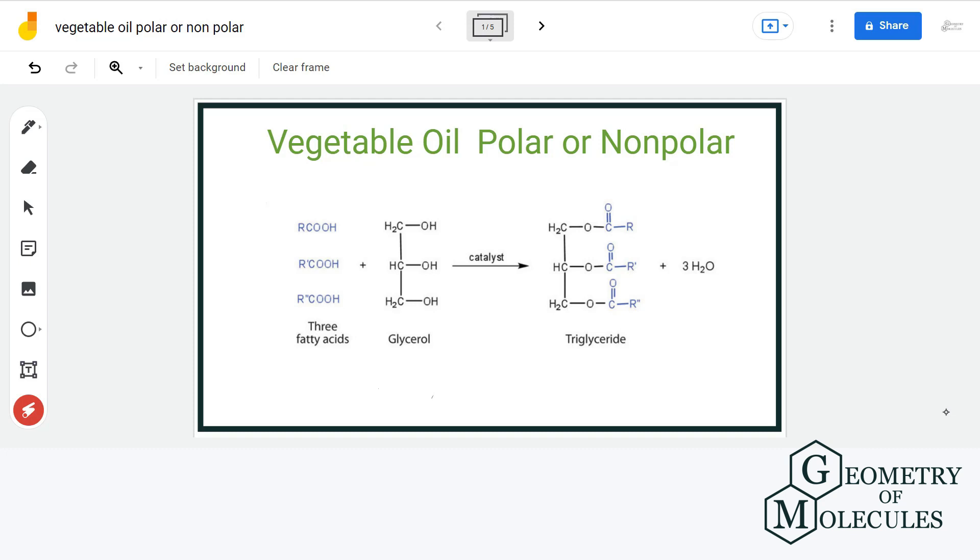Now, vegetable oil consists of molecules known as triglycerides. Now, triglycerides are nothing but esters formed by reaction between three units of fatty acid and glycerol.